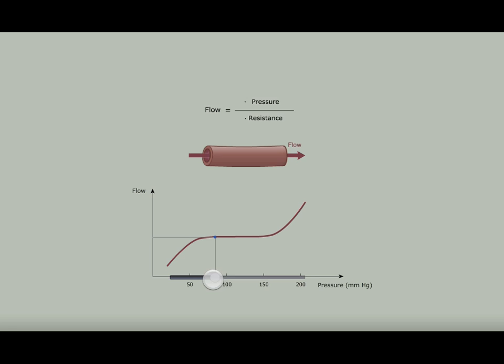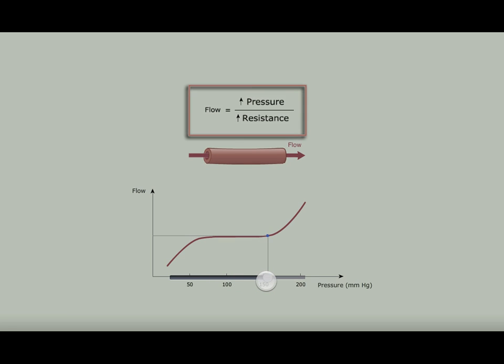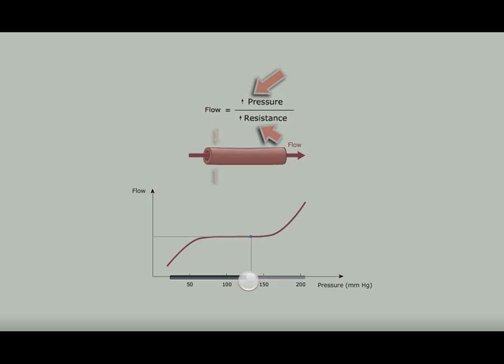If you drag the slider to increase the pressure, you can see how the equation shown near the top changes. Bigger words and up arrows signify an increase in a quantity. Notice how the vessel constricts, increasing its resistance proportional to the increase in pressure.